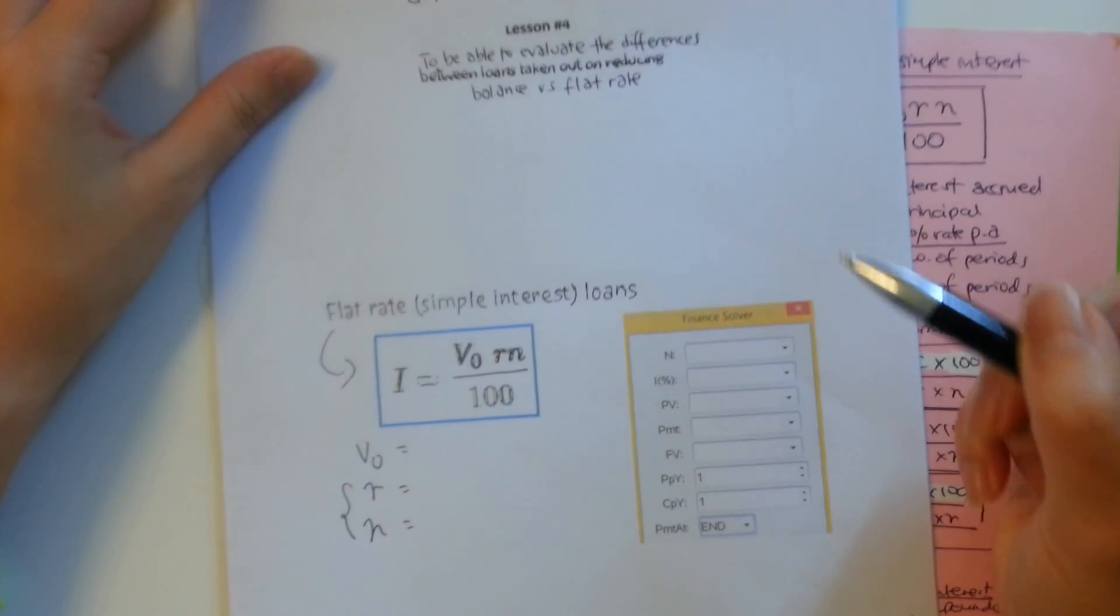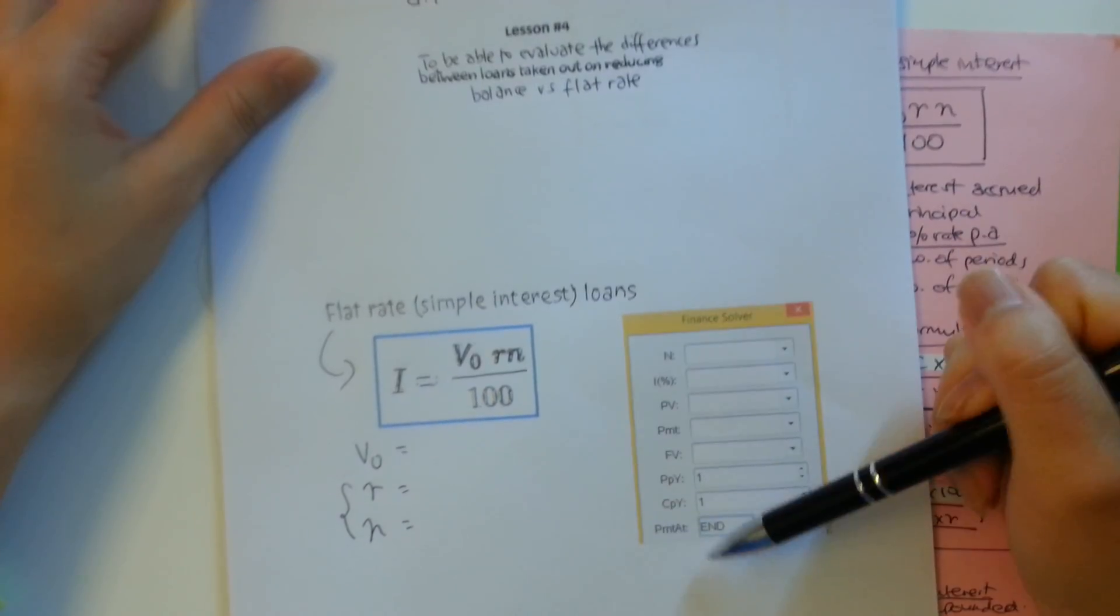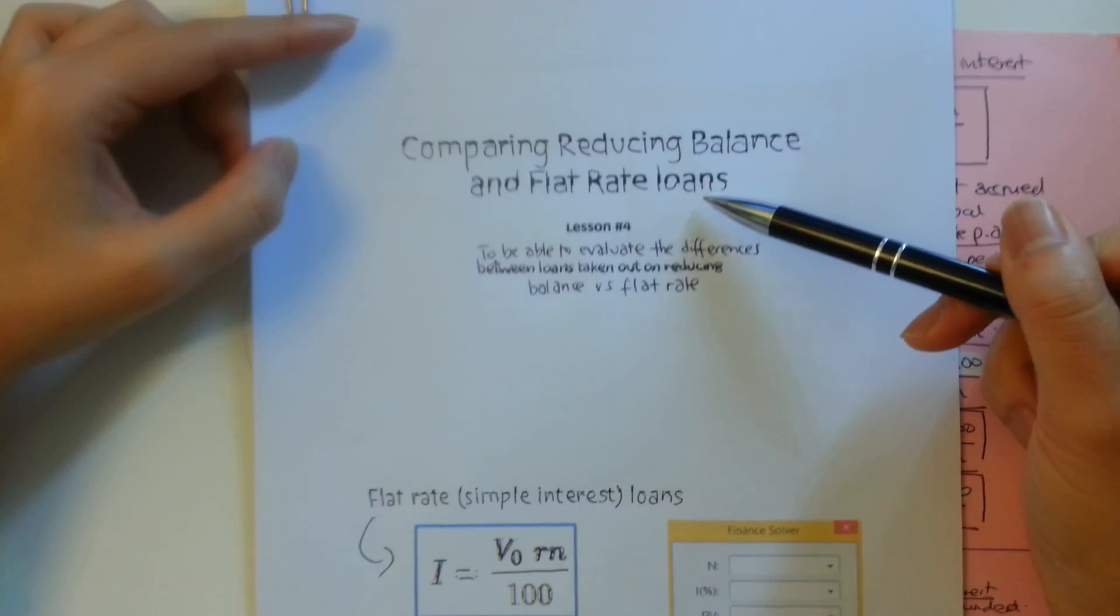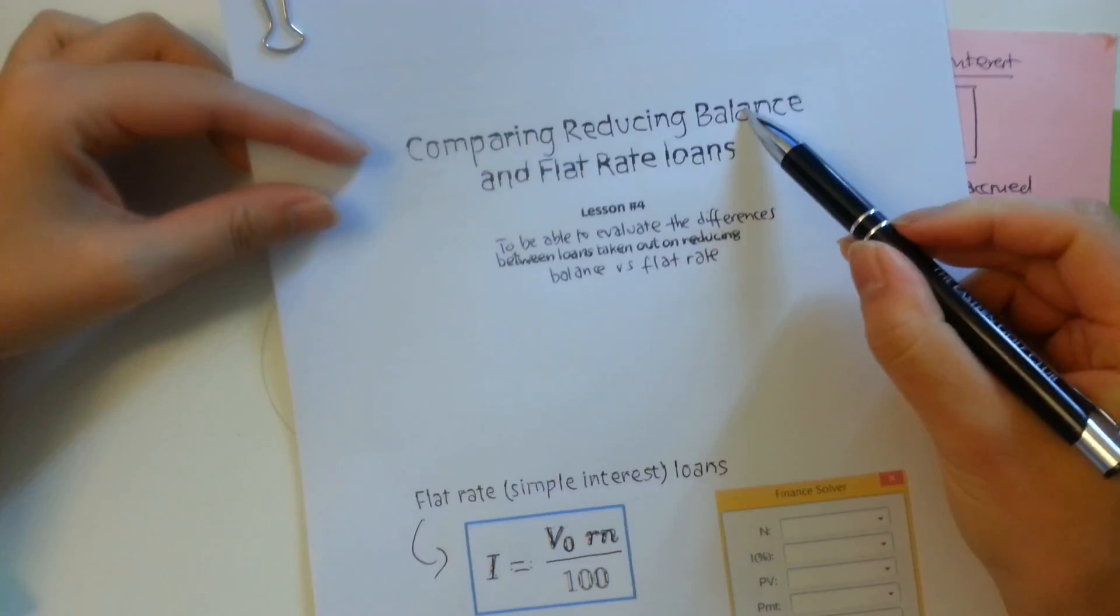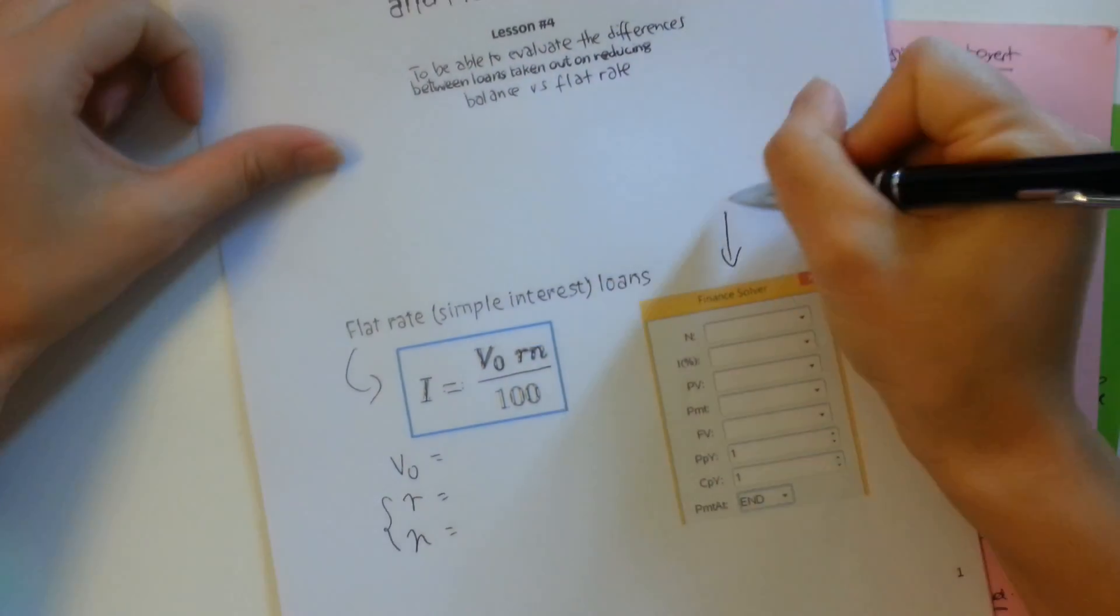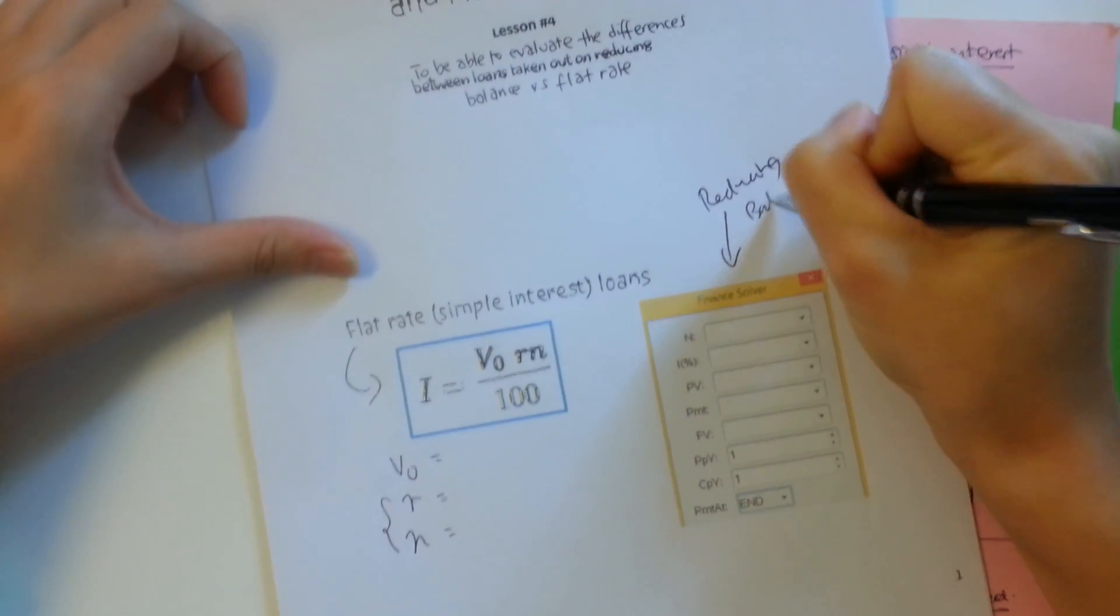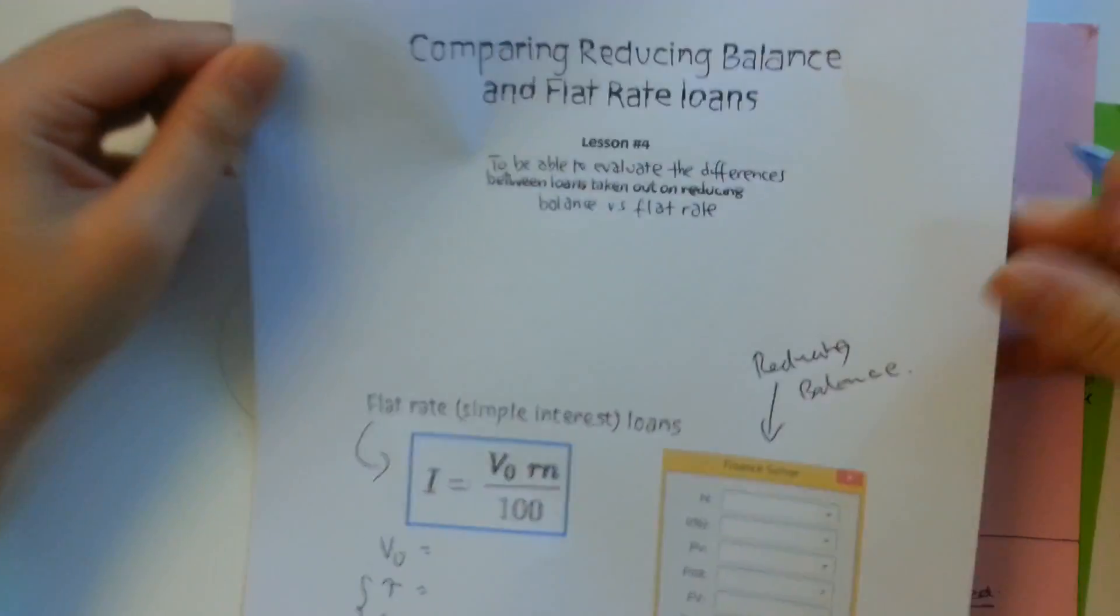Now over here, we cannot calculate simple interest using the finance solver. So I put this here to remind us that when we're doing a comparison between reducing balance and flat rate, our flat rate is going to be determined by this. And our reducing balance, we use our finance solver and our cash calculator for it. So reducing balance, as you always have. So let's go into the first example.